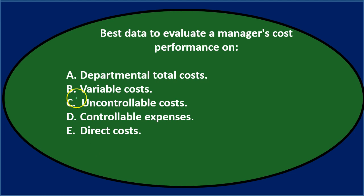A, departmental total costs — if they're a department manager, that sounds reasonable. B, variable costs — variable and fixed costs aren't really what we're looking at here; that's going to vary with production level, so no. C, uncontrollable costs — we're probably not going to use uncontrollable costs. If it's between C and D, you wouldn't measure performance on things people have no control over.